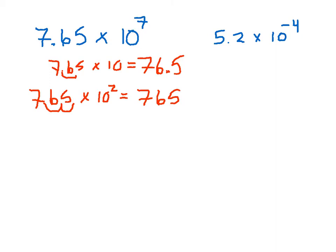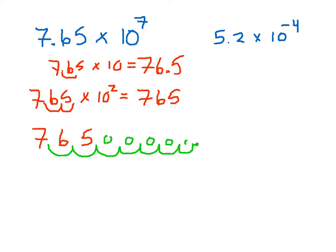Take the digits 7, 6, 5 and move the decimal point 7 places to the right, then fill in the zeros. Moving 7 times, we find we need to add 5 zeros after the digits. Rewriting: 7, 6, 5, and then 5 zeros. Adding commas, our number is 76,500,000. So 7.65 × 10^7 can be converted from scientific notation by moving the decimal point to the right 7 times, and we get 76,500,000.